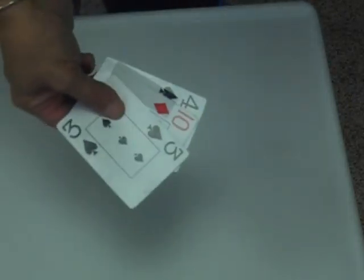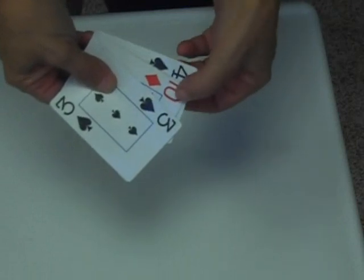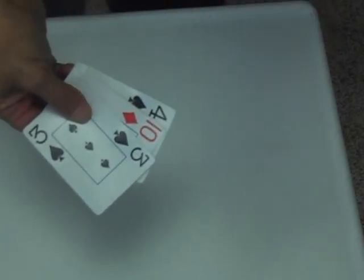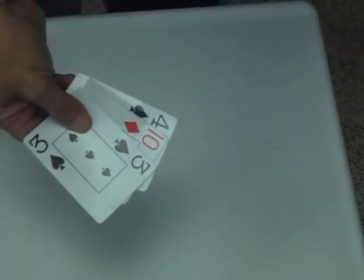Now I want to show you a card trick. Take a look at these cards. We have a black, a red, and a black. It doesn't matter what the numbers are or what the suits are. You just have to have alternating colors.